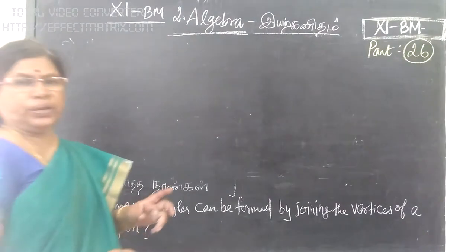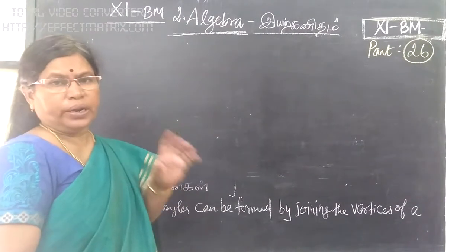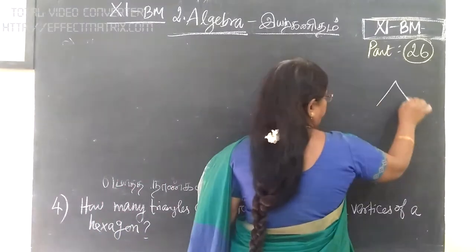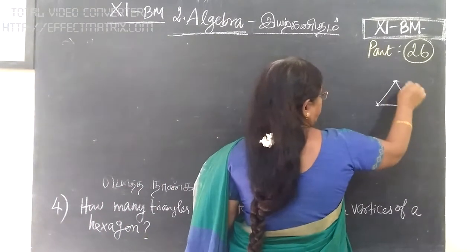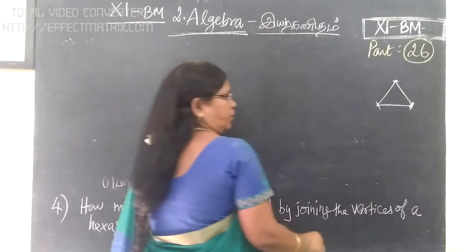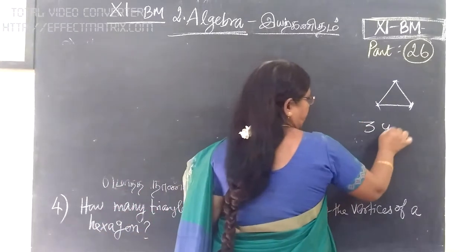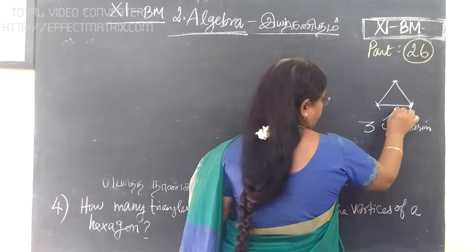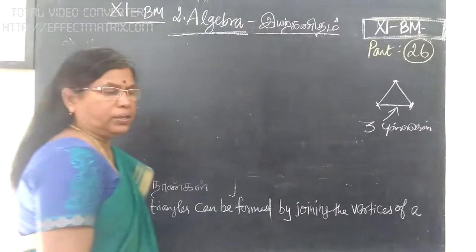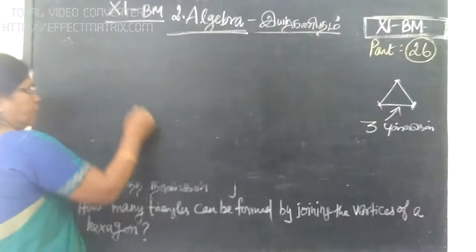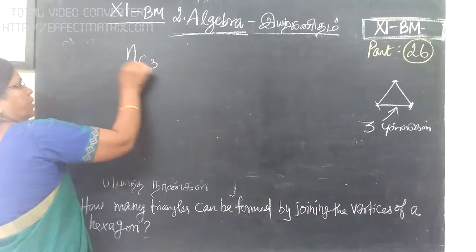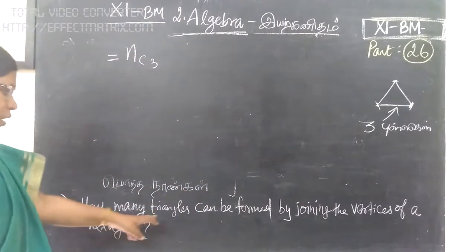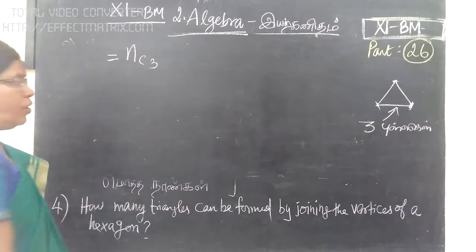To draw a line segment you need 2 points. To draw a triangle you need 3 points. The number of triangles is given in the form of nC3, and the number of polygons are given.